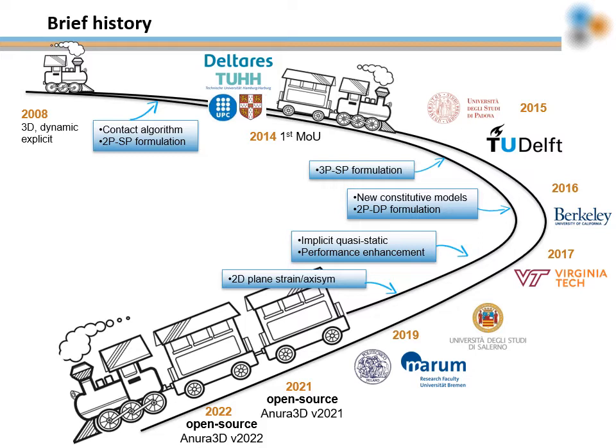Important developments such as multiple-phase hydromechanical formulations are well known in the MPM research field. Historically, the Anura3D software had been shared only within the members of the close community, but after a transition period, since April 30, 2021, the source files are fully open source.